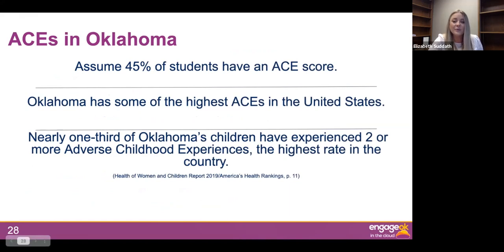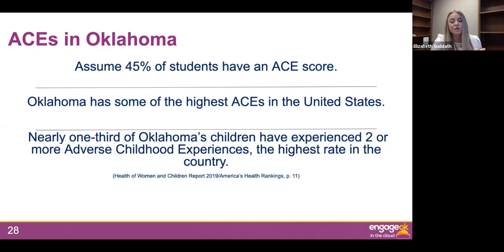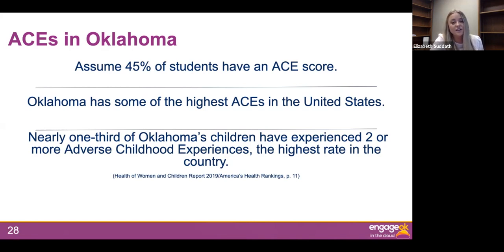Oklahoma has some of the highest ACEs in the United States. Nearly one-third of children have experienced two or more ACEs — the highest rate in the country. And as you move up to ACE scores of four or more, Oklahoma is number one on that list. It is a national recommendation to assume that 45% of your students have an ACE score. We know that Oklahoma experiences some of the highest ACEs in the nation, so it is safe to assume 45% or more of your students have an ACE score.